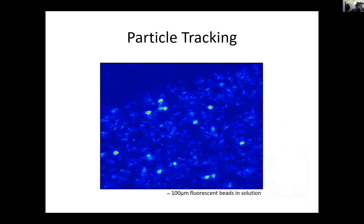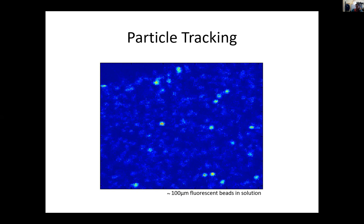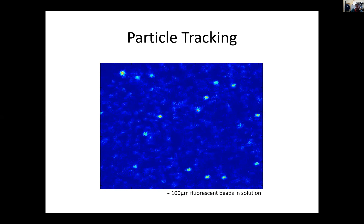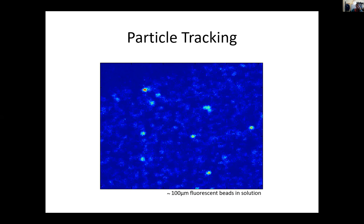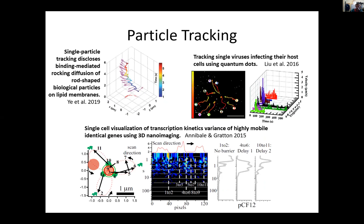Going into biology — our own interest — we also have an interest in tracking objects, because tracking will give us information about what is going on, how they move, why they move. Studying the types of movement can allow us to understand the surroundings of the objects we are tracking. In life sciences, everything is moving, so we may have an interest in tracking everything we can see: biophysics of membrane lipids, tracking viruses, transcription kinetics of DNA — anything you can think of.